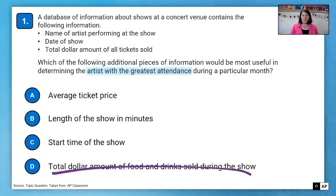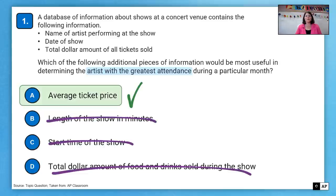So the average ticket price might help us in figuring it out. The length of the show in minutes or the start time of the show don't really have anything to do with how many are in attendance. But if we have the total dollar amount and we have the average ticket price, we could determine how many people were in attendance. So that's our answer A.